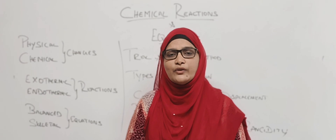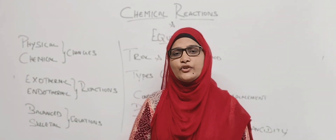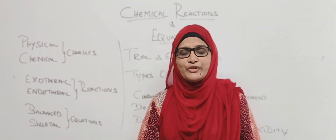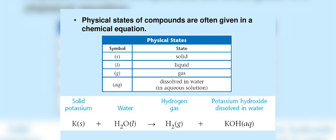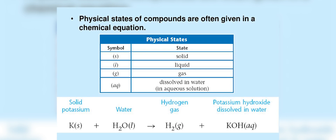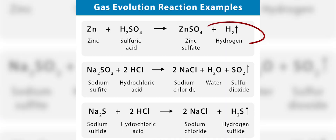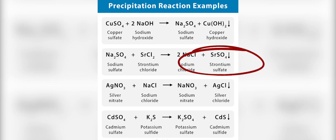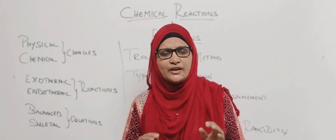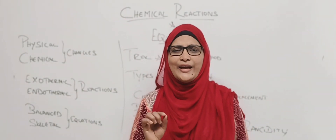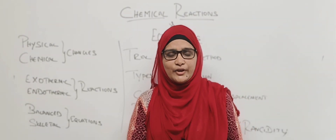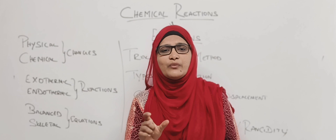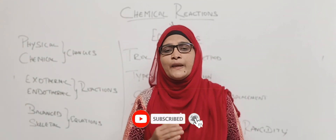In endothermic reactions we absorb heat, and in exothermic reactions we release heat. In chemical equations we also mention the physical state: solid (s), gas (g), liquid (l), and aqueous solution (aq). An upward arrow denotes evolution of gas; a downward arrow denotes formation of a precipitate. Above or below the arrow we mention conditions like heat, electricity, or catalyst used.